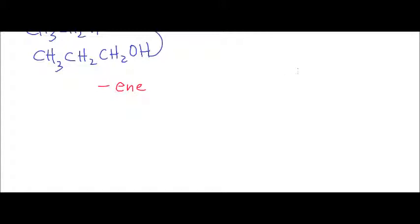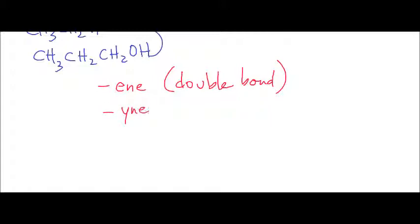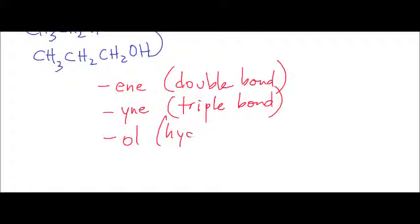What that means is we have a double bond associated with it. We've also come across the alkyne, which means that there is a triple bond associated with it. Something like an -OL in terms of the name, like propanol, means that at the end of the substance we actually have some kind of a hydroxyl group.